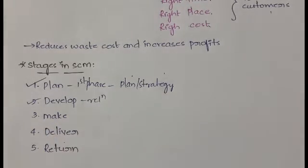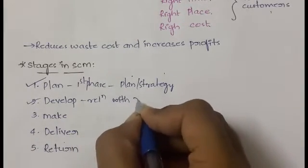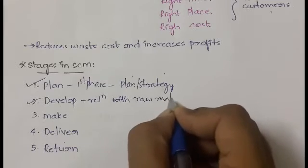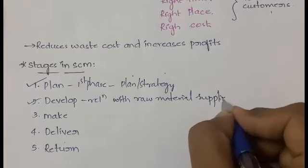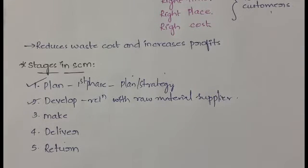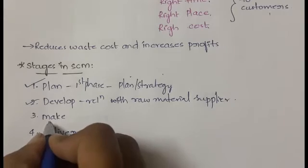The second stage is Develop. Here you establish a relationship with the suppliers of raw materials. To produce any good, the basic thing you need is raw material. In order to get raw material from the supplier on time, with correct quality, you need to establish a relationship with the raw material supplier, speak with them, choose the best deals, and take the raw material.